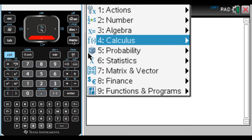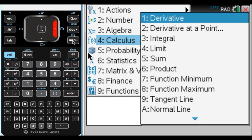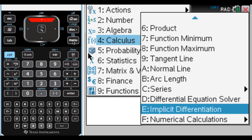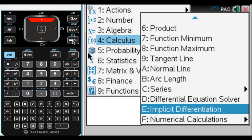If you go to menu and then go to calculus, I usually press the up arrow and go to implicit differentiation.